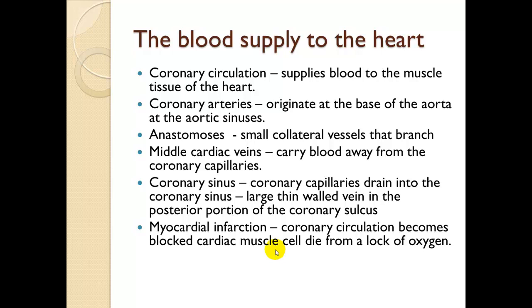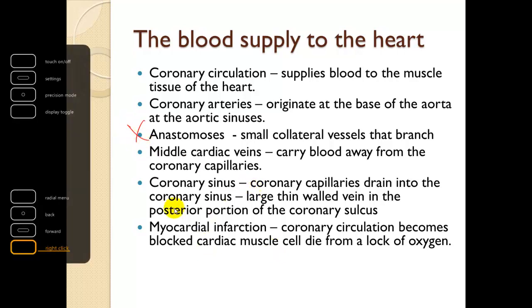Blood supply to the heart: coronary circulation supplies blood to the muscle tissue of the heart. Coronary arteries originate at the base of the aorta at the aortic sinuses. An anastomosis consists of small collateral vessels that branch into various locations. Middle cardiac veins carry blood away from the coronary capillaries. Coronary capillaries drain into the coronary sinus — a large, thick-walled vein in the posterior portion of the coronary sulcus. A coronary or myocardial infarction occurs when coronary circulation becomes blocked and cardiac muscle cells die due to lack of oxygen.